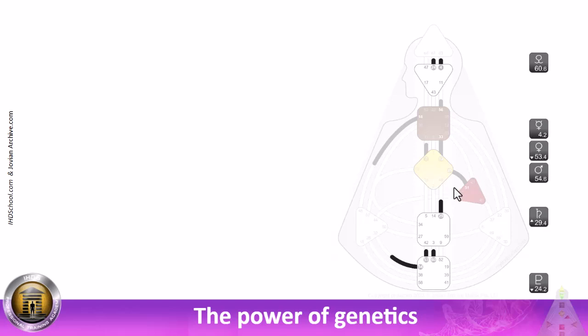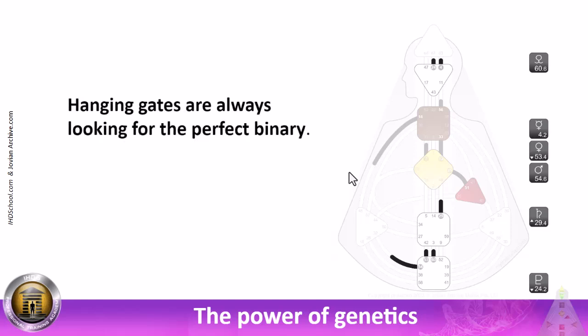So, back to our chart here, hanging gates. Yeah? They are enormous. The power of our genetics show the enormous conditioning power because hanging gates are always looking for the perfect binary. What's on the other side? So, you mean, you see, the meaning here of the hanging gate is that this is what we are attracted to on the other side of the channel. And so, we're looking for the other side. I want to give you something to contemplate. Maybe write this down if you're a strategic and you want to remember.